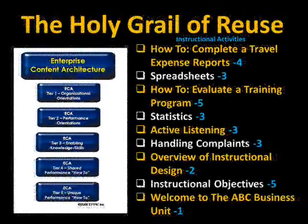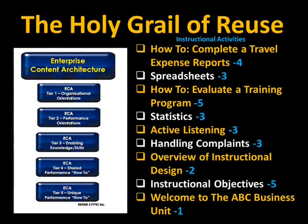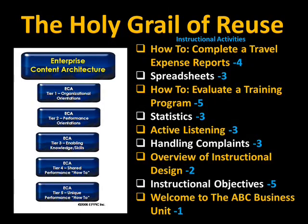Spreadsheets — generic spreadsheet training. Spreadsheets, which would be necessary to complete a travel expense report depending on the tool used, would be in a generic enabler and would be found in tier three. Statistics, which would be used in evaluating a training program, would be a tier three set of content, shareable with many different terminal performance sets of content.